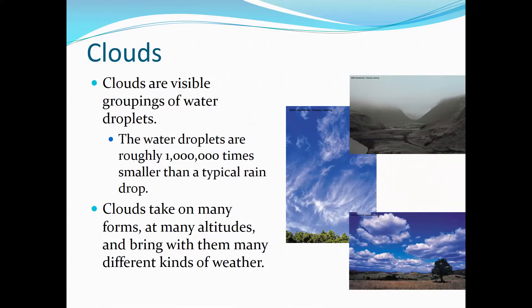Cloud droplets are still very, very small. If you've ever flown through a cloud on a plane, it really looks hazy outside rather than just doused in rain. The fact of the matter is cloud droplets are one million times smaller than a typical raindrop. We'll talk about why that is in our next module when we talk about precipitation.